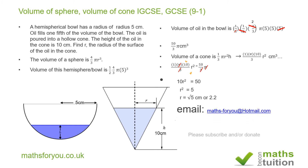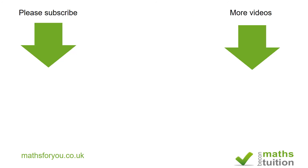You can leave your answer as root 5 because that is an accurate answer, and you're not asked to give it to any number of decimal places, so root 5 is acceptable. But you can use your calculator — the square root of 5 is about 2.23. I hope that made sense. Please subscribe or donate and watch some of my other videos. Thank you for watching and have a great day!